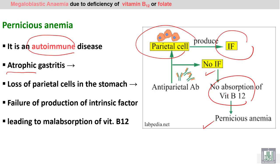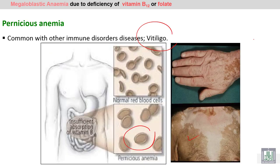A specific type of megaloblastic anemia from gastric causes is pernicious anemia. It is an autoimmune disease due to autoantibodies against parietal cells and also against intrinsic factor, resulting in no intrinsic factor and therefore no absorption of B12. These antibodies lead to atrophic gastritis and loss of parietal cells.